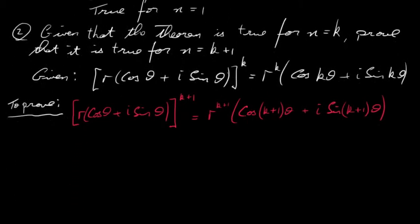Now we're going to use the usual method for proof by induction. We're going to assume that it's true for some number k — that is, n = k — and we're going to prove that it's true for n = k + 1. So this here is what we're given: that it's true for n = k. In other words, r(cos θ + i sin θ)^k = r^k(cos kθ + i sin kθ). This is what we're assuming to be true.